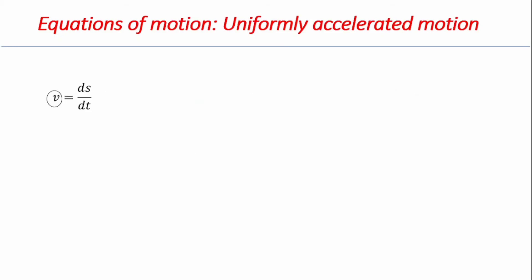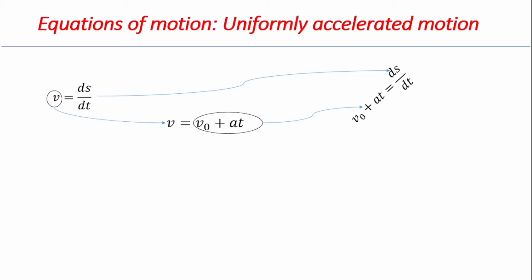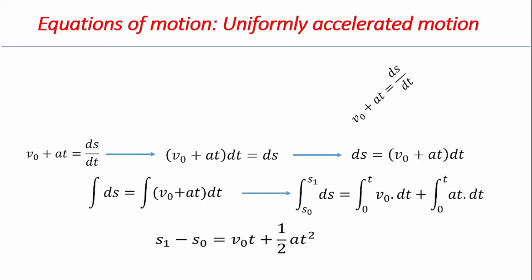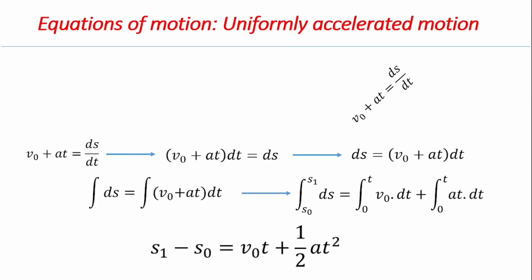Recalling the equation v = ds/dt, and substituting v = v0 + at into it, we have v0 + at = ds/dt. Multiplying both sides by dt and then integrating with limits from s0 to x1 for position and 0 to t for time, we obtain x1 minus x0 = v0·t + ½·a·t². This is our second equation of motion for uniformly accelerated motion.